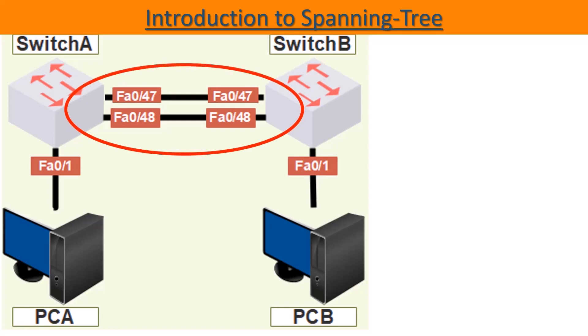We will see why a network loop can cause a lot of problems. Imagine that PCA sends an ARP request because it tries to reach PCB without knowing its MAC address. An ARP request is a broadcast. Switch A will therefore transmit this broadcast on all its ports except the one from which it arrived — that is, except for the port to which PCA is plugged. Switch B will therefore receive two broadcast frames, as there are two links between the switches. Since this is a broadcast frame, it will send it to all of its ports except the one it came from.